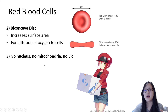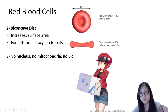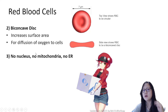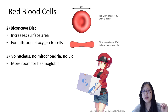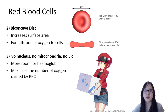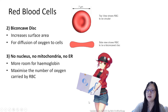Red blood cells have no nucleus, no mitochondria, and no endoplasmic reticulum. This is so there is more room for hemoglobin, which maximizes the amount of oxygen that can be carried by each red blood cell.